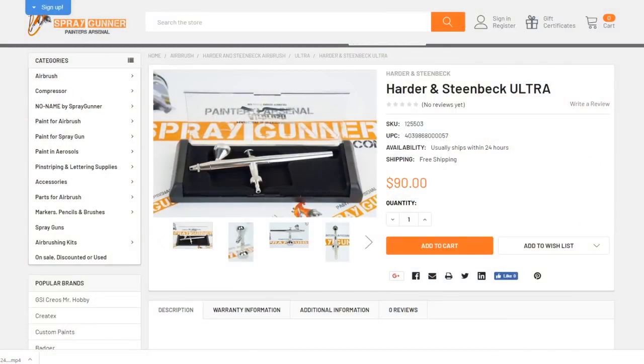Here in the states, Spraygunner.com is a great place to start on your airbrush journey. They have super affordable airbrushes starting with this Harder & Steenbeck, but they also carry other stuff that you might want as well.